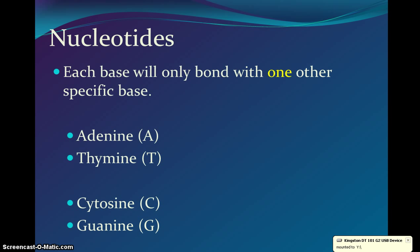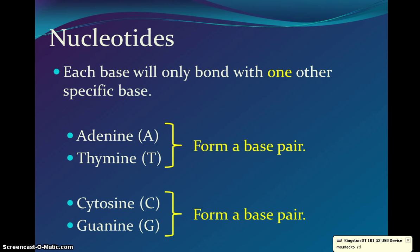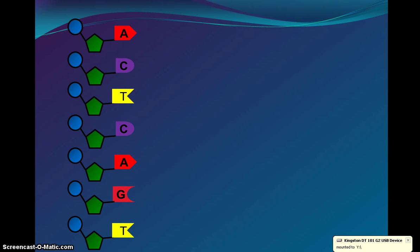There are certain bases that only bond with other specific bases. Adenine will always bond with thymine, and thymine will always bond with adenine — they won't bond with any other bases. The same goes with cytosine and guanine — they will always pair together. You will never see cytosine with thymine or guanine with adenine. On your note sheet go ahead and mark those two: adenine and thymine pair together, and cytosine and guanine pair together.